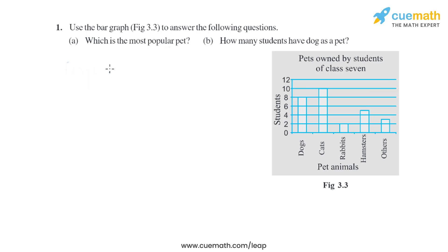Question one of this exercise says use the bar graph to answer the following questions: which is the most popular pet, and how many students have dog as a pet? Now I will look into the graph. There are 8 students who have dog.